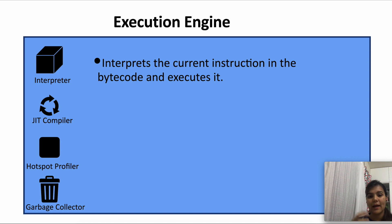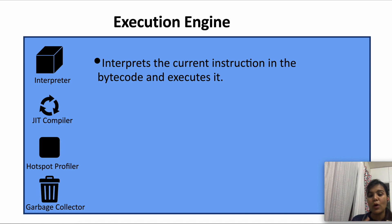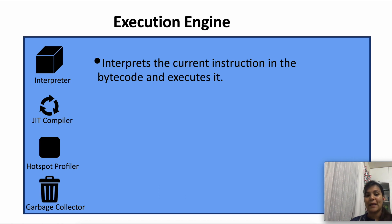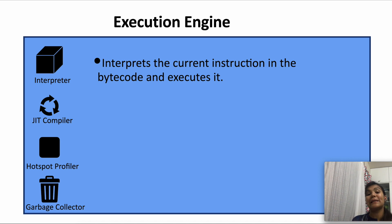The interpreter's job is to interpret the current instruction — it translates the current bytecode instruction into native machine code for the CPU to process. The problem with the interpreter is that if a method is being called multiple times, it's going to interpret the same bytecode again and again. For example, a for loop printing some value will execute the same bytecode the same number of times repeatedly, which is inefficient.